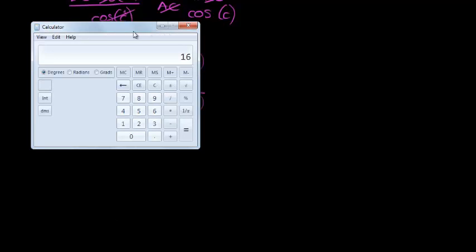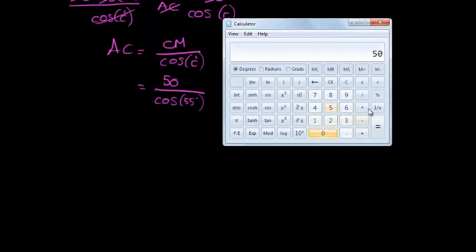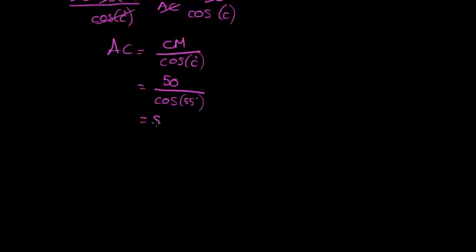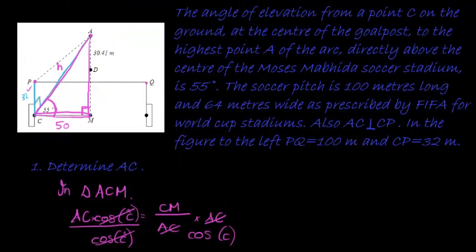So we have 50 divided by 55 cos gives me 87.17. So, AC is 87.17. Since we rounded, let's use approximation signs. Approximately 87.17 meters, approximate to two decimal places. Second question.